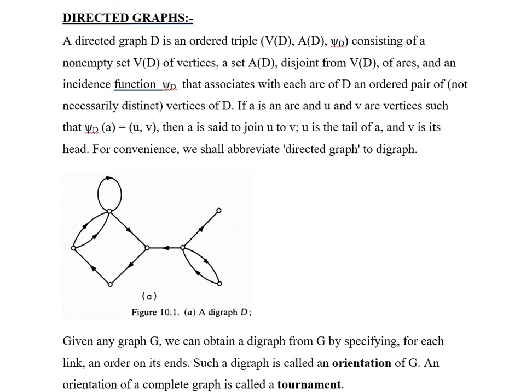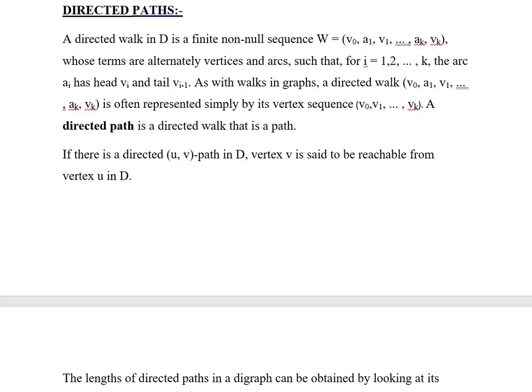Such a digraph is called an orientation of the graph G. An orientation of a complete graph is called a tournament. Next is directed paths. A directed walk in the digraph D is a finite non-null sequence represented by w = v_0 a_1 v_1 ... a_k v_k, whose terms are alternately vertices and arcs such that for i = 1, 2, ... k,